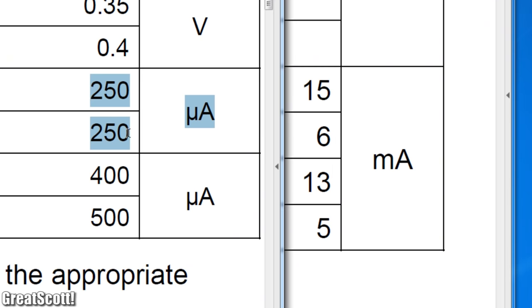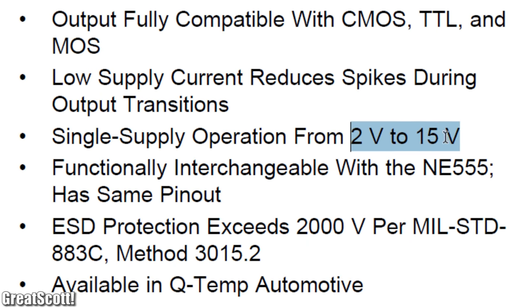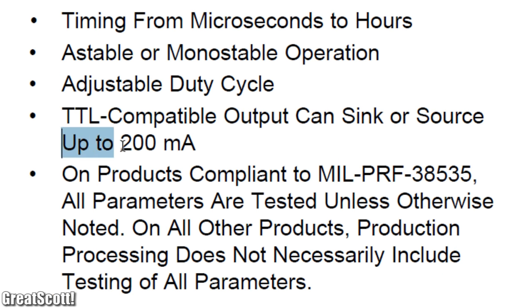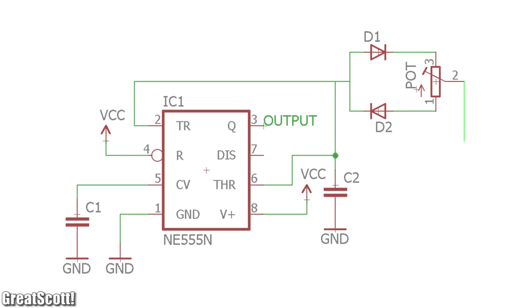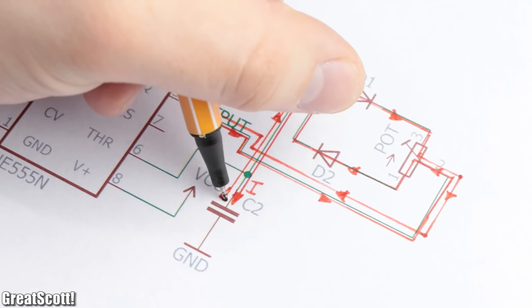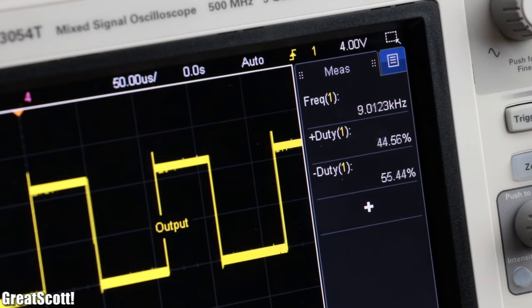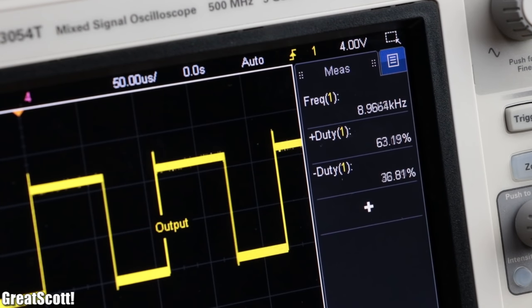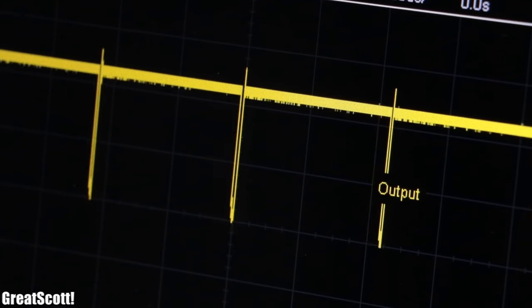But not only that, it also consumes less current, can achieve higher frequencies, and work with lower supply voltages. But it cannot output as much current as its TTL counterpart. Now in order to adjust the duty cycle, we simply need to replace the resistor with two diodes and a potentiometer, which separates and adjusts the charging and discharging current, and thus finally creates a beautiful PWM signal with constant frequency for controlling your power electronics. And with that being said, you already know all the basics of a 555 timer IC.